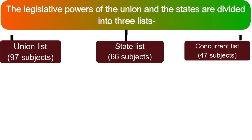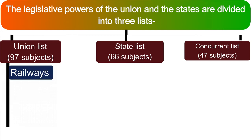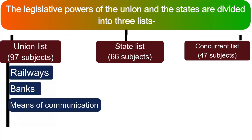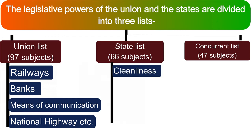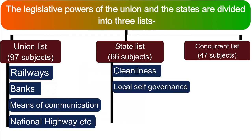Union list has a total of 97 subjects. Some important subjects of this list are railway, banks, means of communication, and national highway. State list has 66 subjects and the important subjects are cleanliness, local self-governance, irrigation, and roads.